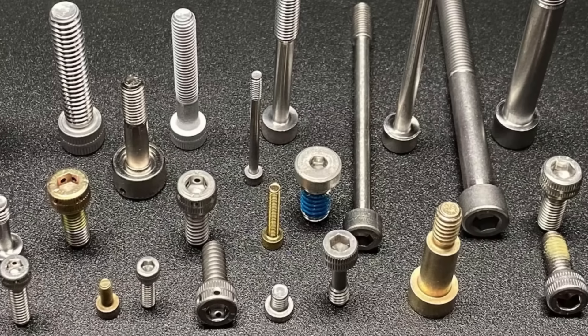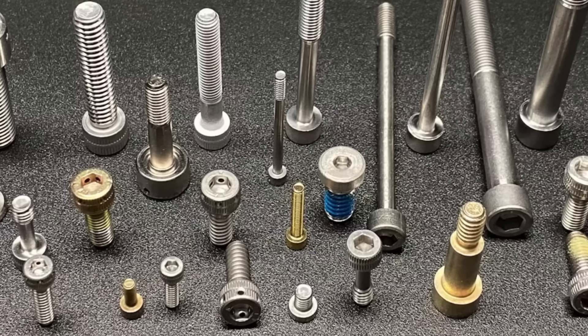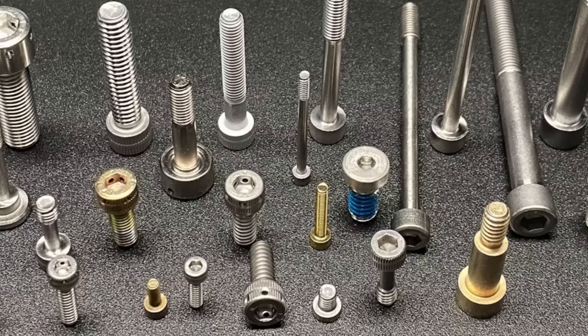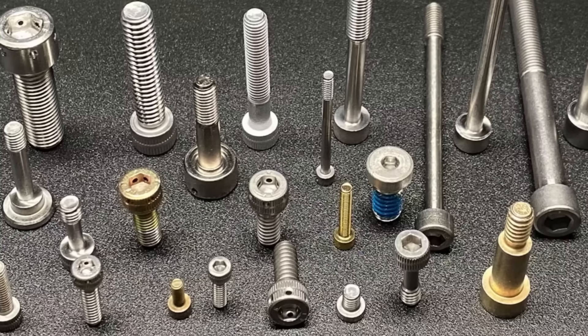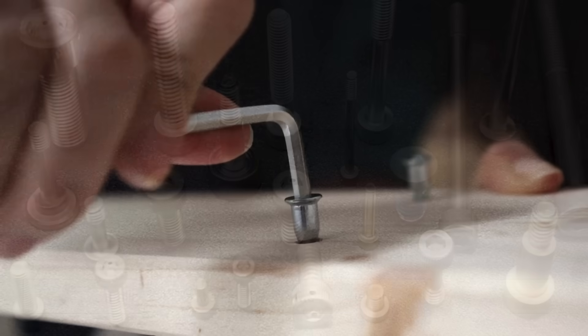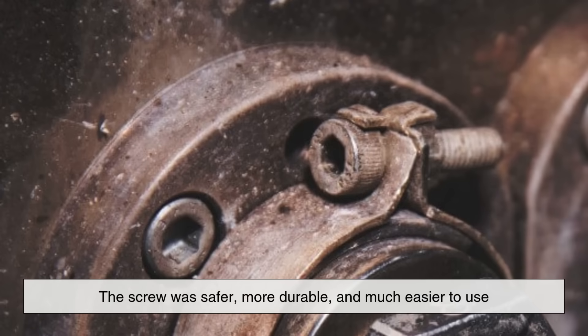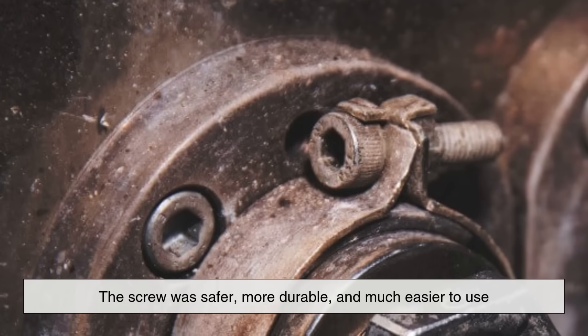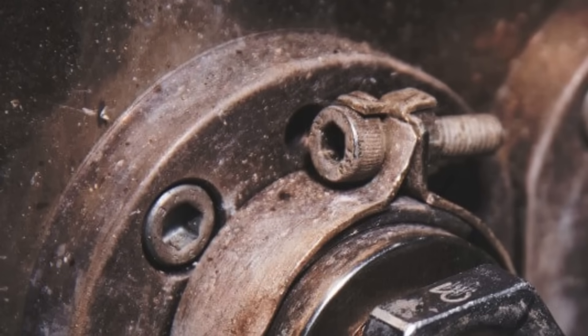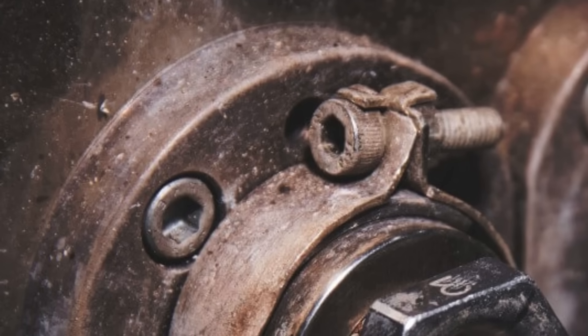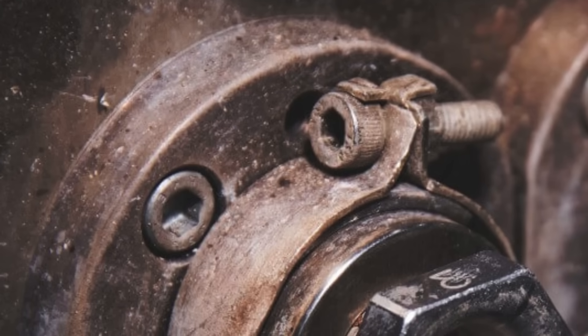This design was revolutionary. Because the hexagon shape had six points of contact, much more than the single slot of a flathead, it allowed for stronger grip, better torque, and less slipping. The screw was safer, more durable, and much easier to use, especially in industrial machines where high pressure and high precision were essential.